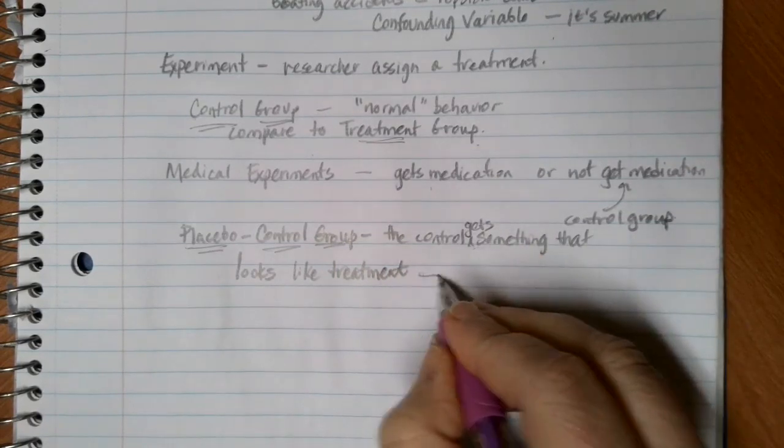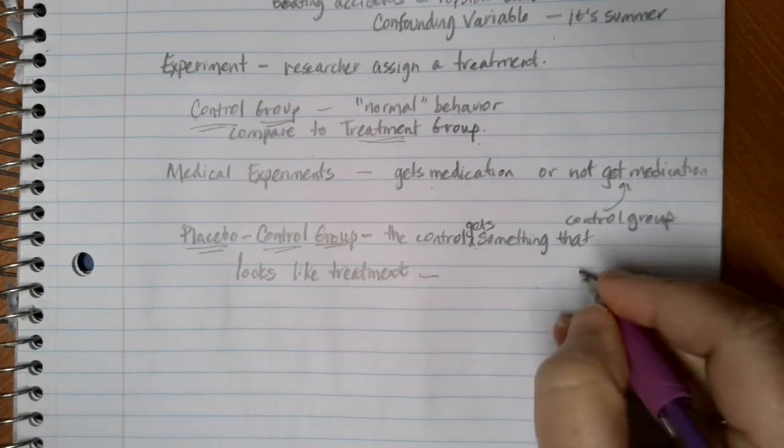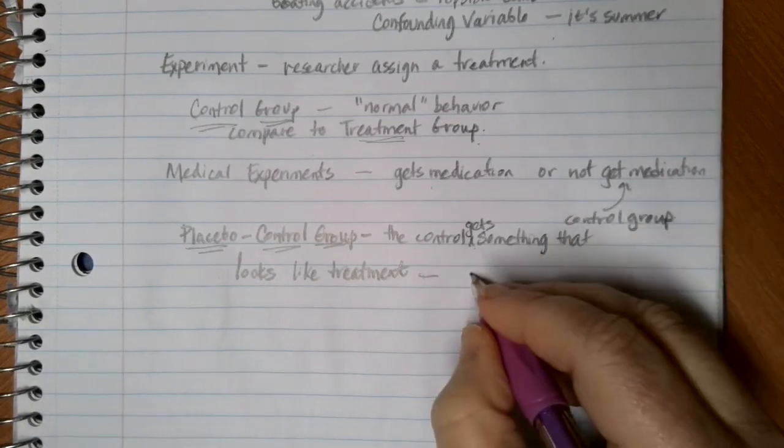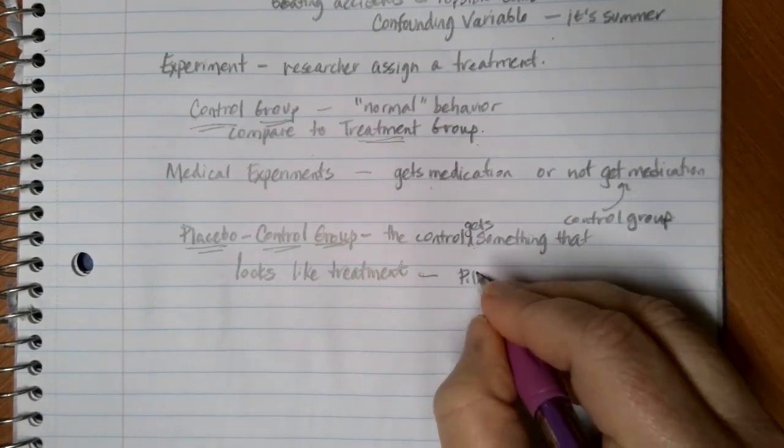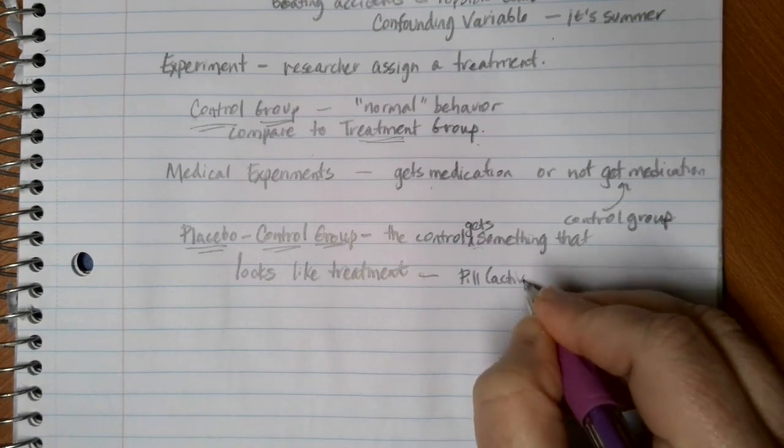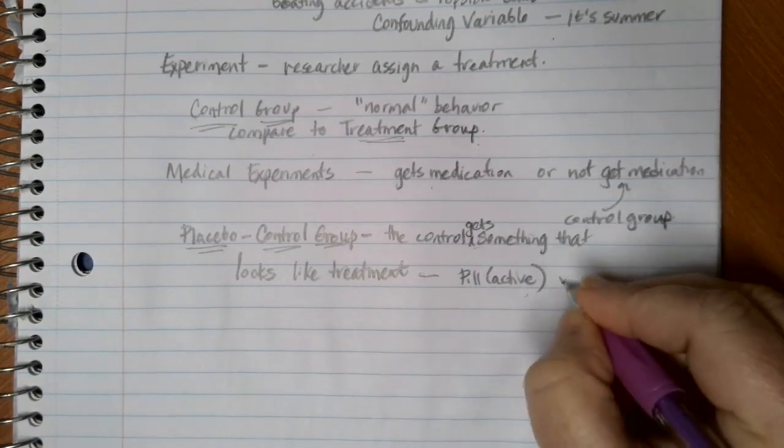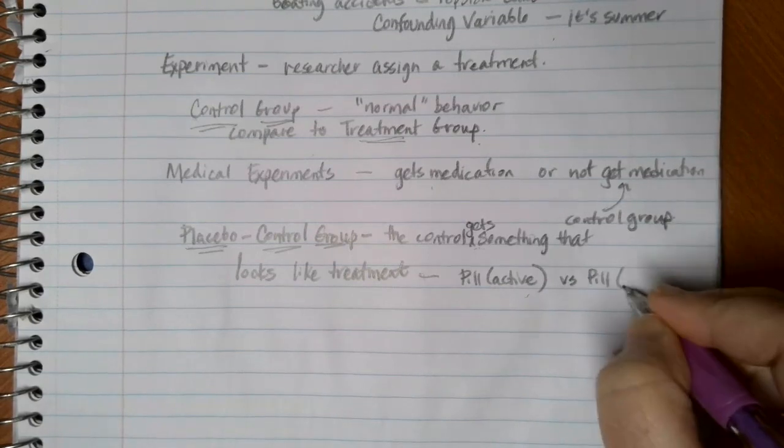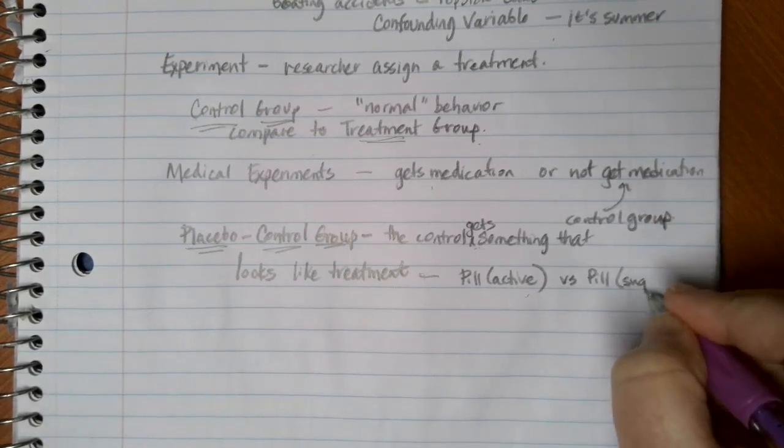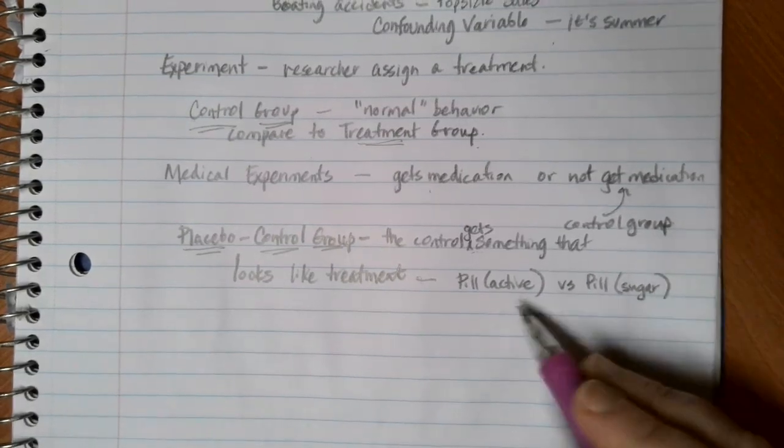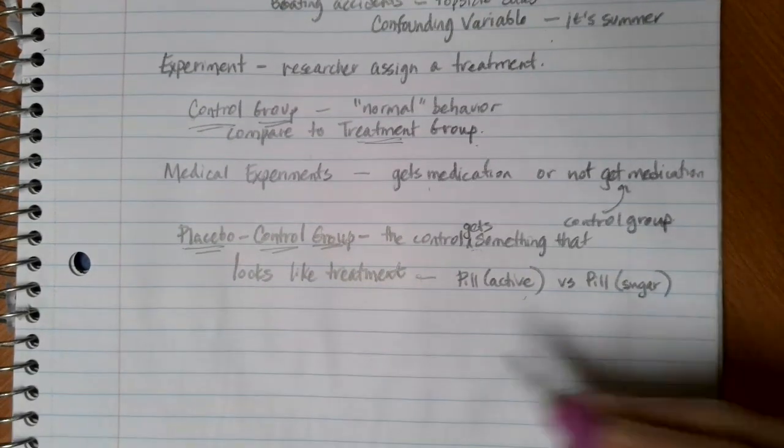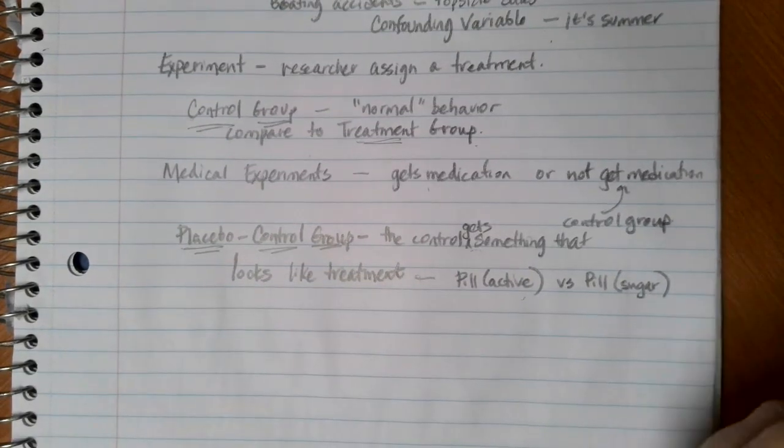So for example, maybe everybody is going to get a pill in both the control group and not the control group. One of the pill has an active ingredient, like aspirin, and then the other group is going to get a pill that doesn't do anything. So maybe just a lot of times they call them a sugar pill or something like that, where it doesn't have any of the active ingredients, but both groups are going to go through the process of taking the pill.